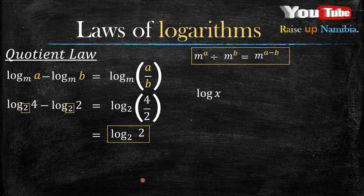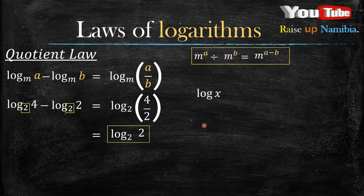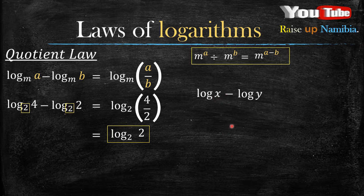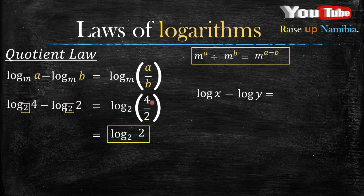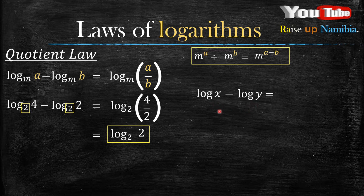So your answer is log base 2 of 2, and that's your final answer. Now, how about when you have log and there is no base written, but you have log x minus log, no base written again, and then y? What will your answer be?